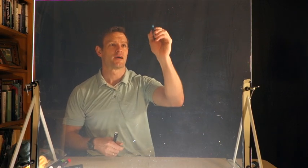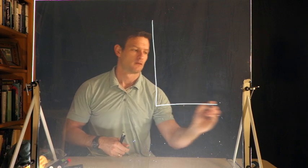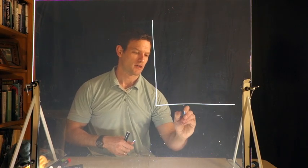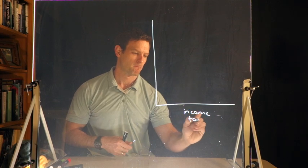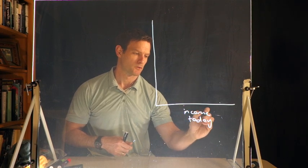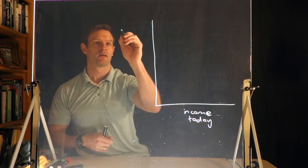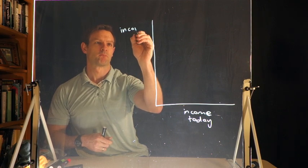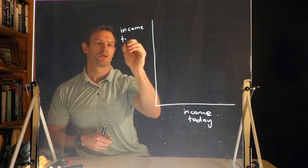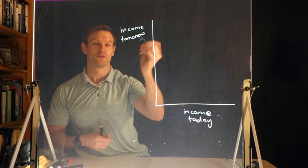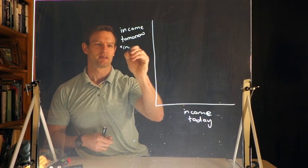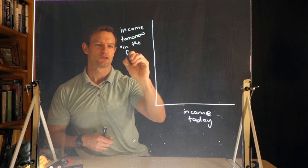What I want to think about is we've got two axes: we've got income today and we've got income tomorrow or in the future.